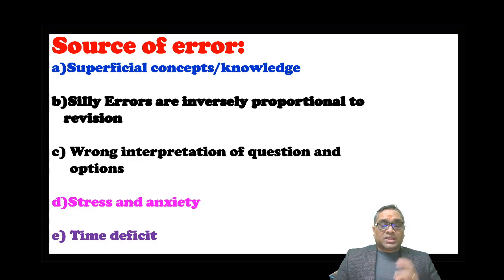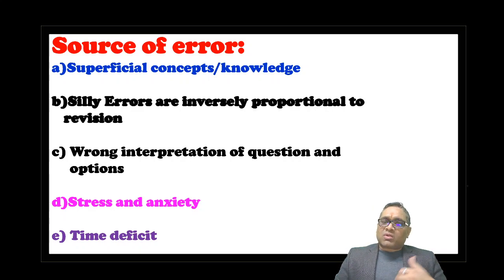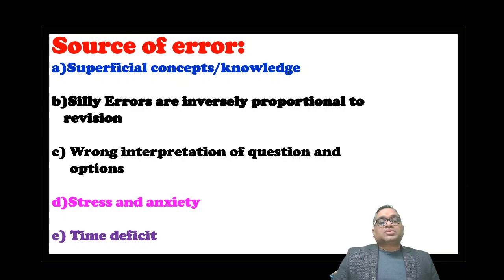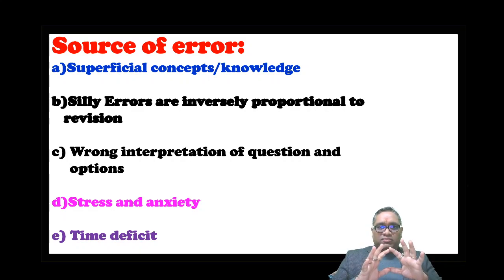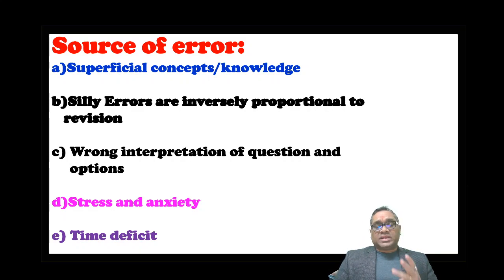The third important thing is the wrong interpretation of the question and options due to over-excitement. For example, if the examiner says there is effacement of the podocyte, many students will immediately go for minimal change disease and not look at the second option — membranous, the third — MPGN, or the fourth — all of the above. Read all four options before you attempt the question.